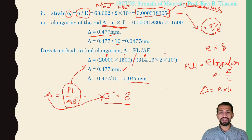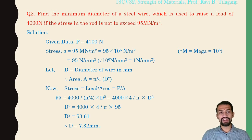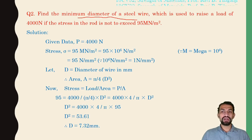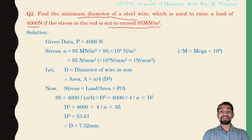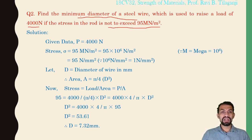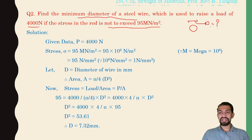That was the first numerical. Second numerical: find the minimum diameter of a steel wire used to raise a load of 4000 Newtons if the stress in the rod is not to exceed 95 mega Newton per meter square. This is a unit conversion problem. A steel wire — its diameter is required; we need to determine what the diameter is.